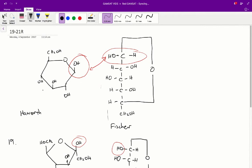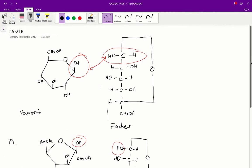And you can kind of see this pattern emerging. It kind of alternates sides and here it's alternating sides. So that's how you sort of read between the Haworth and Fischer structures.